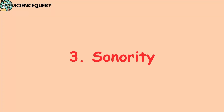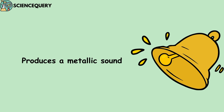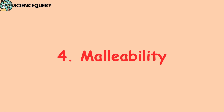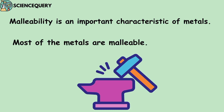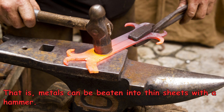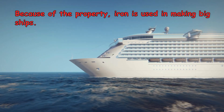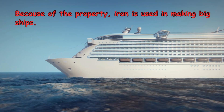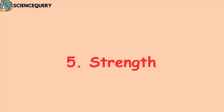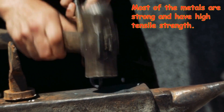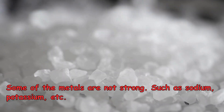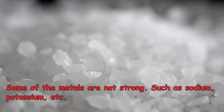The next property is sonority — that is the ability to produce a metallic sound when hit. Another property of metal is malleability. Malleability is an important characteristic of metal; most metals are malleable, meaning they can be beaten into thin sheets with a hammer. Because of this malleable property, iron is used in making big ships. Another physical property of metal is its strength — most metals are strong and have high tensile strength, though some like sodium and potassium are not strong.